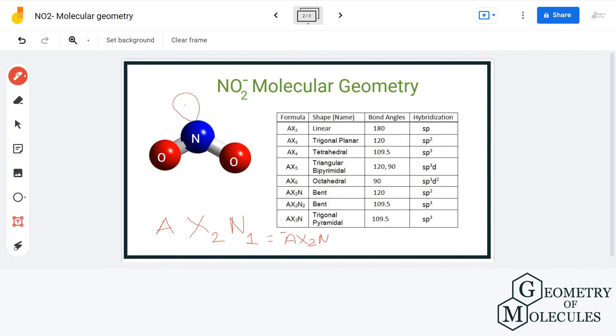If we refer to this table, we can see that molecules that have AX2N formula have bent shape with bond angle of 120 degrees and hybridization is sp2.